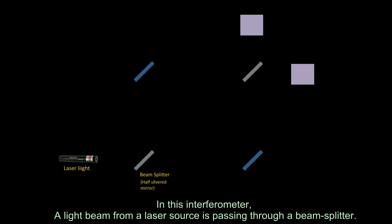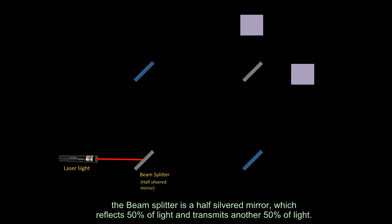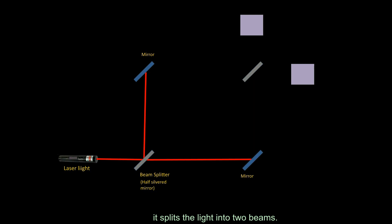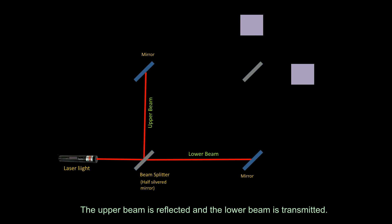In this interferometer, a light beam from a laser source passes through a beam splitter — a half-silvered mirror which reflects 50% of light and transmits the other 50%, splitting the light into two beams: an upper reflected beam and a lower transmitted beam.